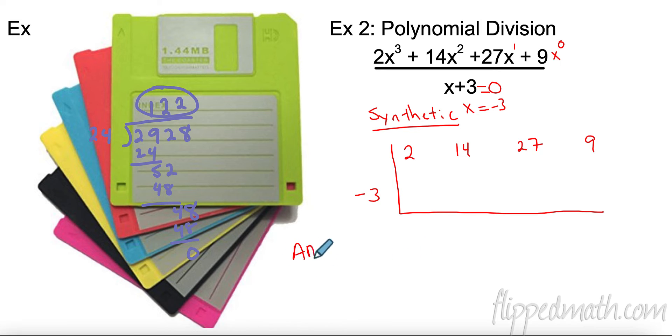Very easy. I'm going to add down. So this is a column. There's nothing there. 2 plus nothing is 2. Then I'm going to multiply up. So negative 3 times 2 is negative 6. Add down. 14 plus negative 6 is 8. Multiply up. Negative 3 times 8 is negative 24. Add down. 27 plus negative 24 is 3. Multiply up. Negative 9. Add down. 0.